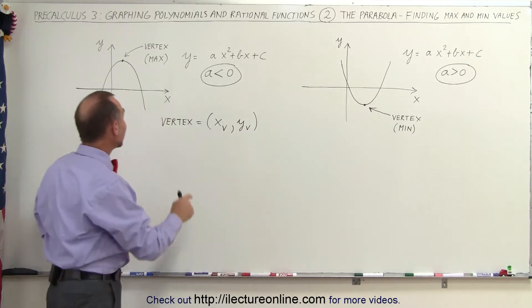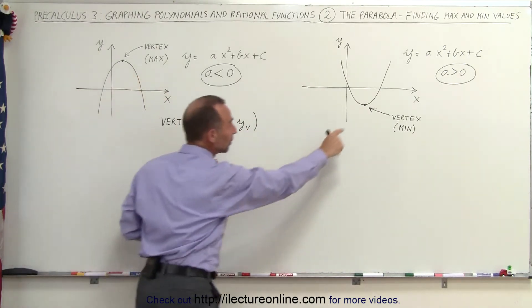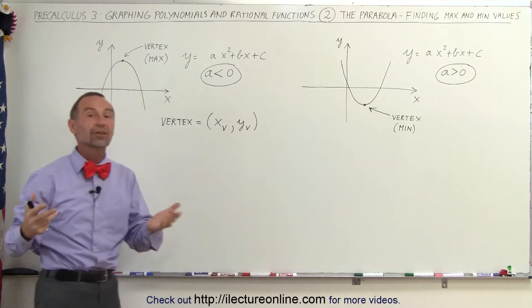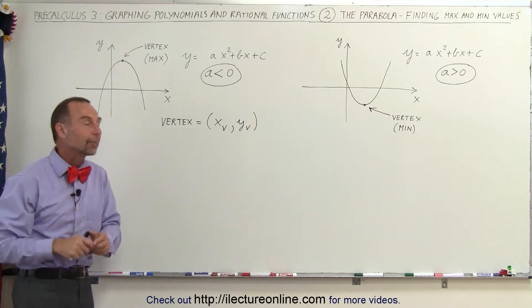Those points representing either the maximum value or the minimum value of a parabola are called the vertices, or the vertex of that parabola.